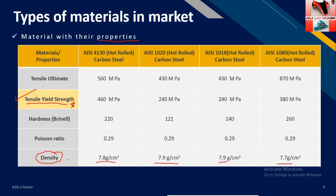Density will play a major role when our structure becomes more complicated and vast. Other parameters like ultimate strength, hardness, and Poisson's ratio will not affect our frame as much.